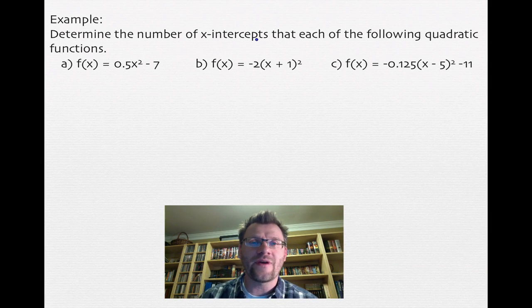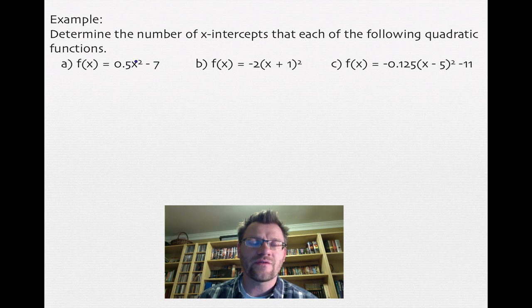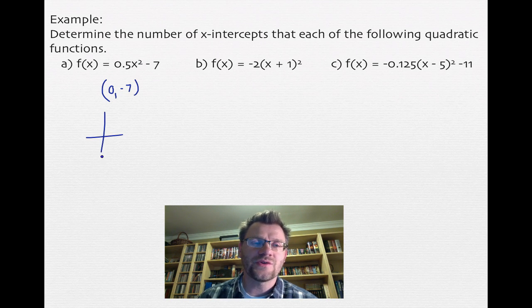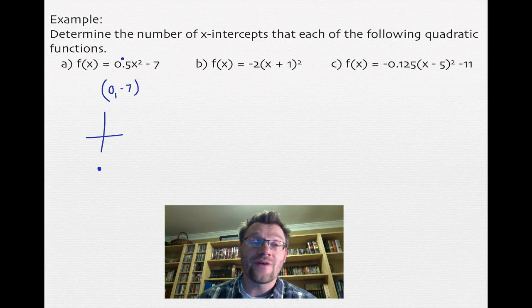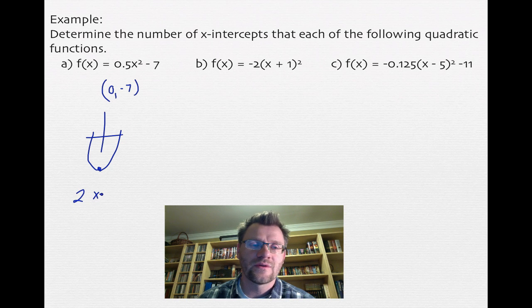The next example asks us to determine the number of x-intercepts for each quadratic function. For f of x equals 0.5x squared minus 7, the vertex is at (0, negative 7) because there is no p term. The a value is positive, so the parabola opens up. Drawing a quick sketch — vertex below the x-axis, opening upward — tells us there are two x-intercepts.